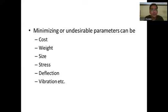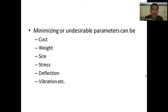The second minimizing parameter is the weight of the design, equipment, or part. The third one is the size of the design, equipment, or part. The next one is stress — if stresses are more, there are higher chances of failure of the component. Minimizing stress is therefore an important parameter in optimum design.